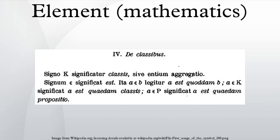Notation and terminology. The relation 'is an element of', also called set membership, is denoted by the symbol ∈. Writing x ∈ A means that x is an element of A. Equivalent expressions are: x is a member of A, x belongs to A, x is in A, and x lies in A. The expressions 'A includes x' and 'A contains x' are also used to mean set membership, however some authors use them to mean instead x is a subset of A.